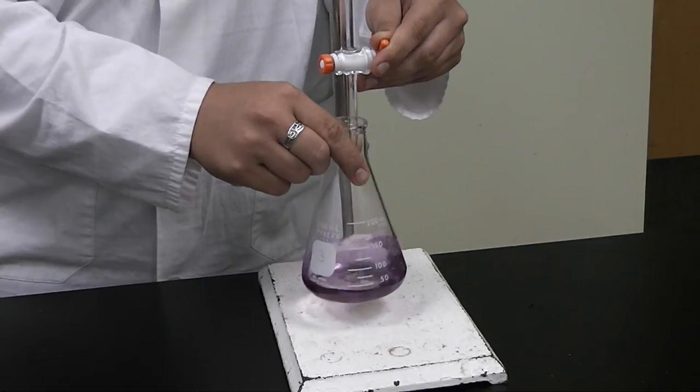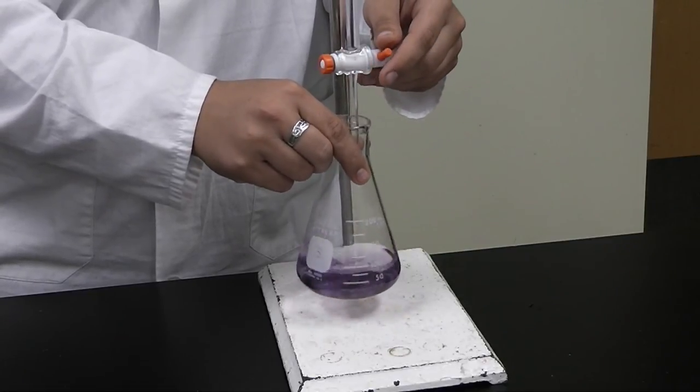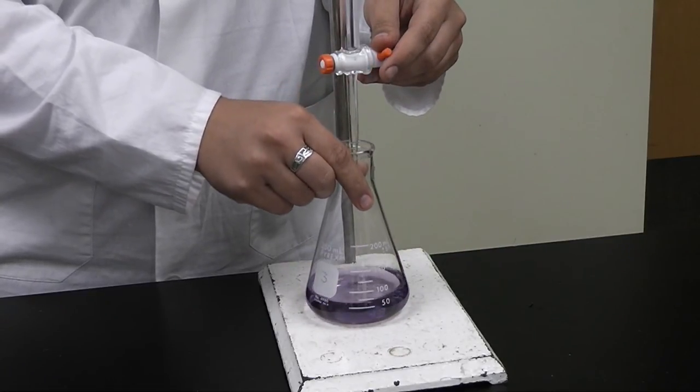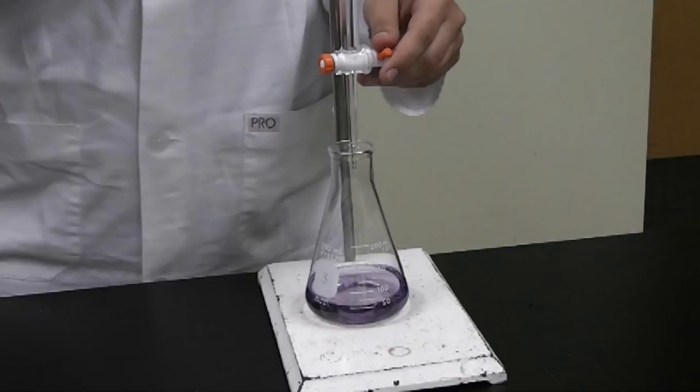You can add a half a drop by simply turning the stopcock gently until a drop begins to form at the end of the burette, but does not fall into the solution. Simply touch the burette to the Erlenmeyer flask and the drop should fall in.